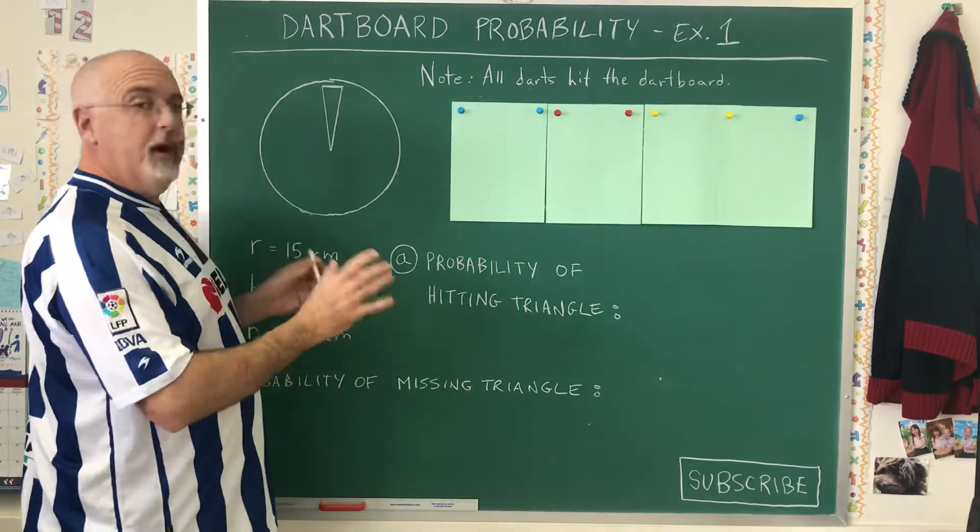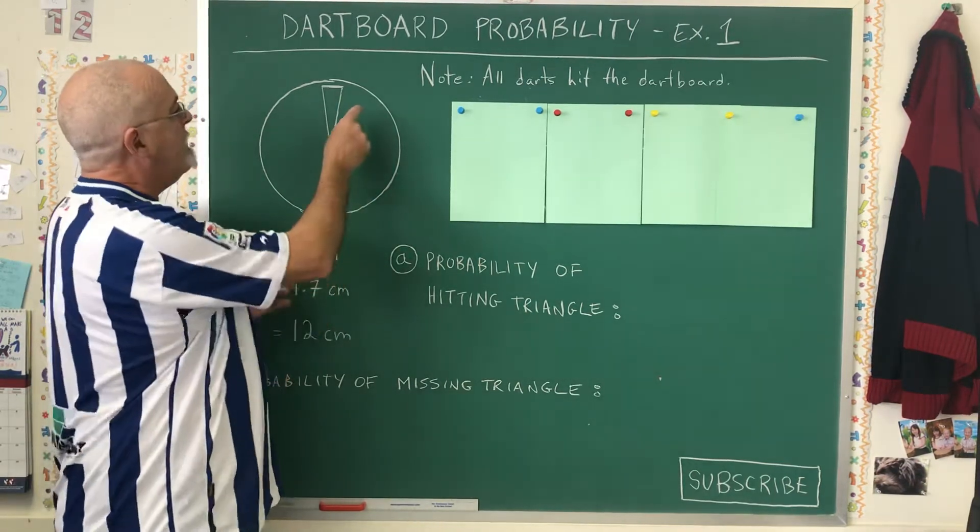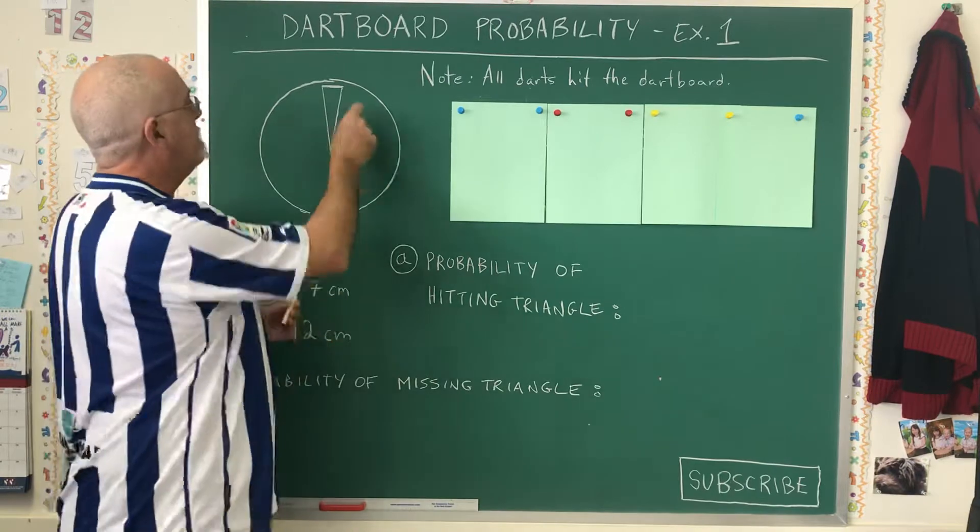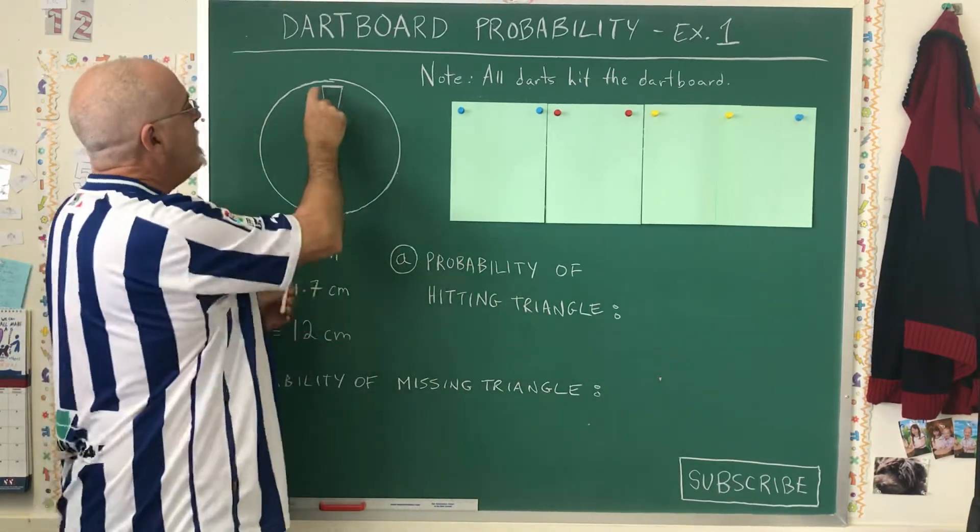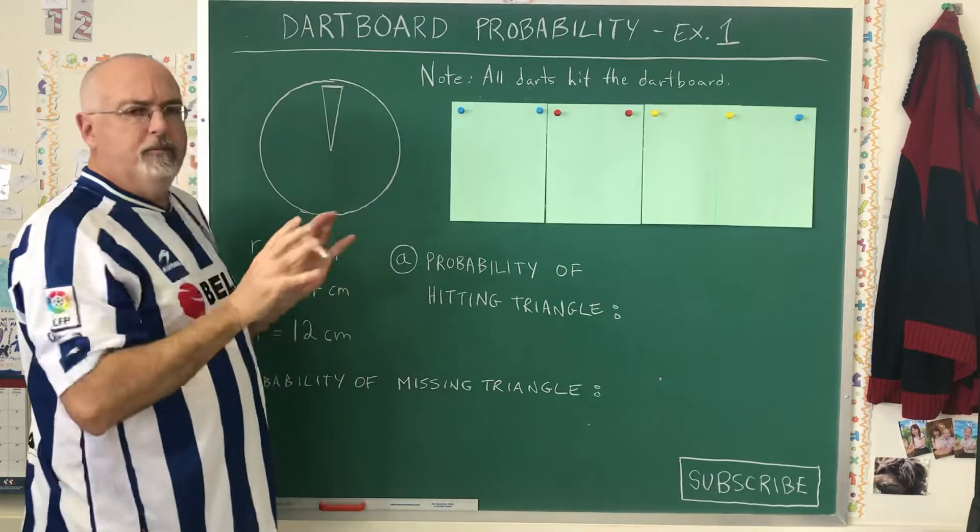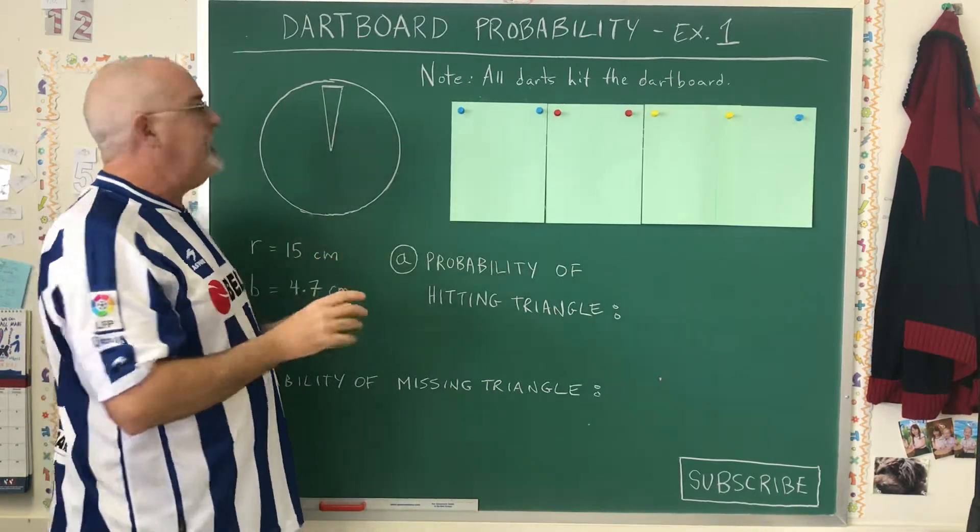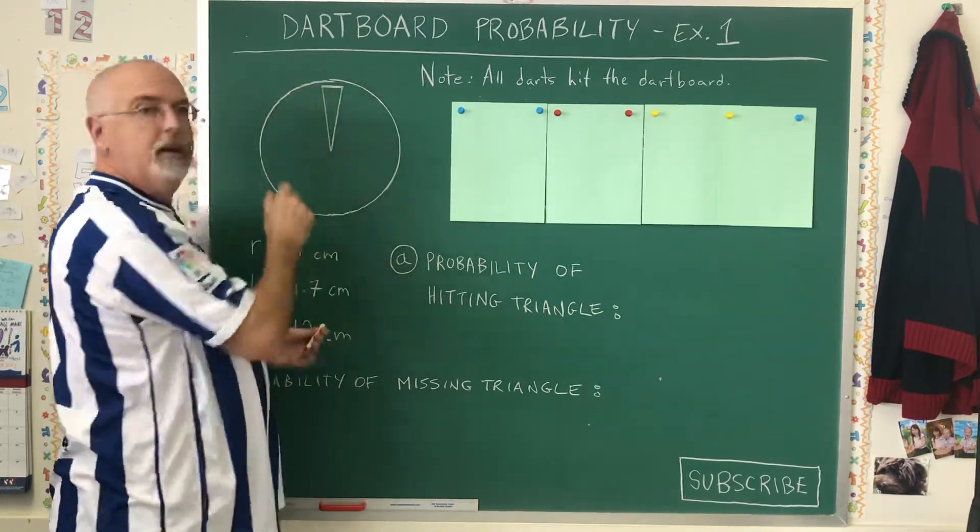In example one, I have something that actually looks a lot like a dartboard—a circle with a triangle on top of it. The triangle represents fairly closely the shape of the 20 part of the dartboard,